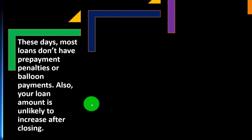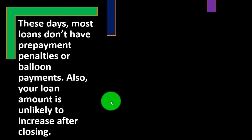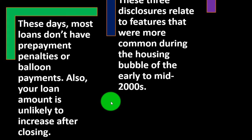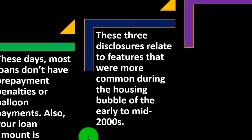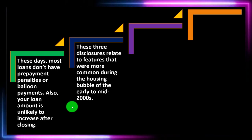The loan terms box also shows whether your loan amount, interest rate, and monthly principal and interest payment can increase after closing, whether there is a prepayment penalty (and if so, how much and when it applies), and whether there is a balloon payment. These days, most loans don't have prepayment penalties or balloon payments. Your loan amount is also unlikely to increase after closing. These three disclosures relate to features that were more common during the housing bubble of the early to mid 2000s.